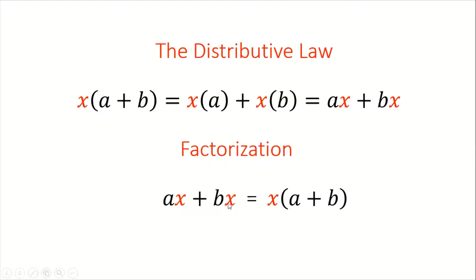And if you take bx divided by x, x divided by x would give you 1, and 1 times b would give you b, so you put b in the bracket. And this would be the factors. So x would be one factor, and a plus b would be another factor.